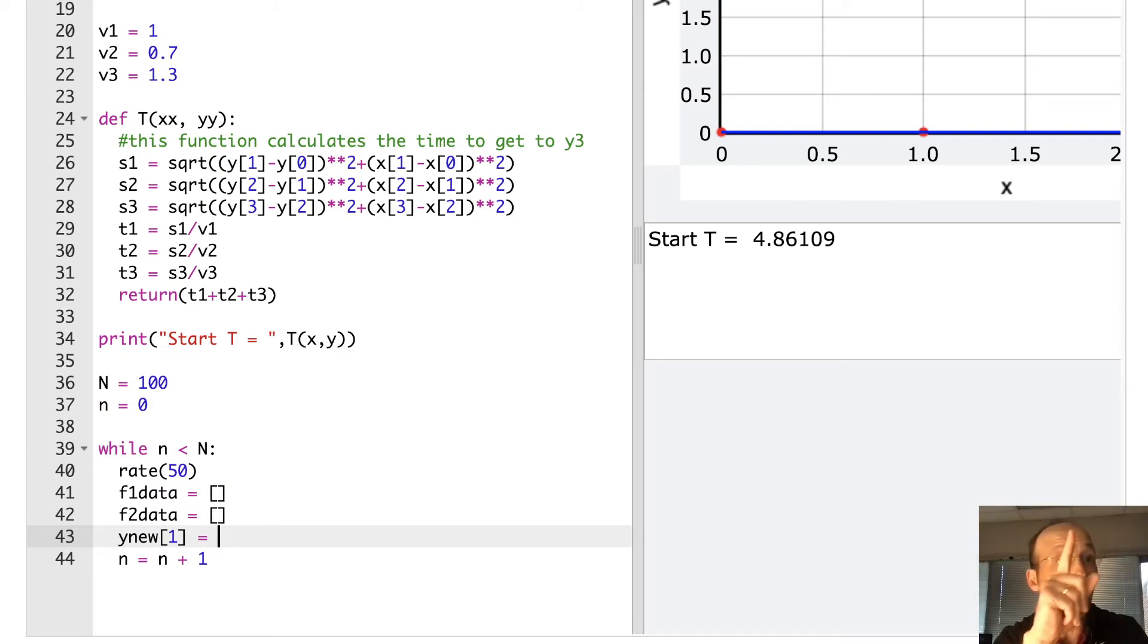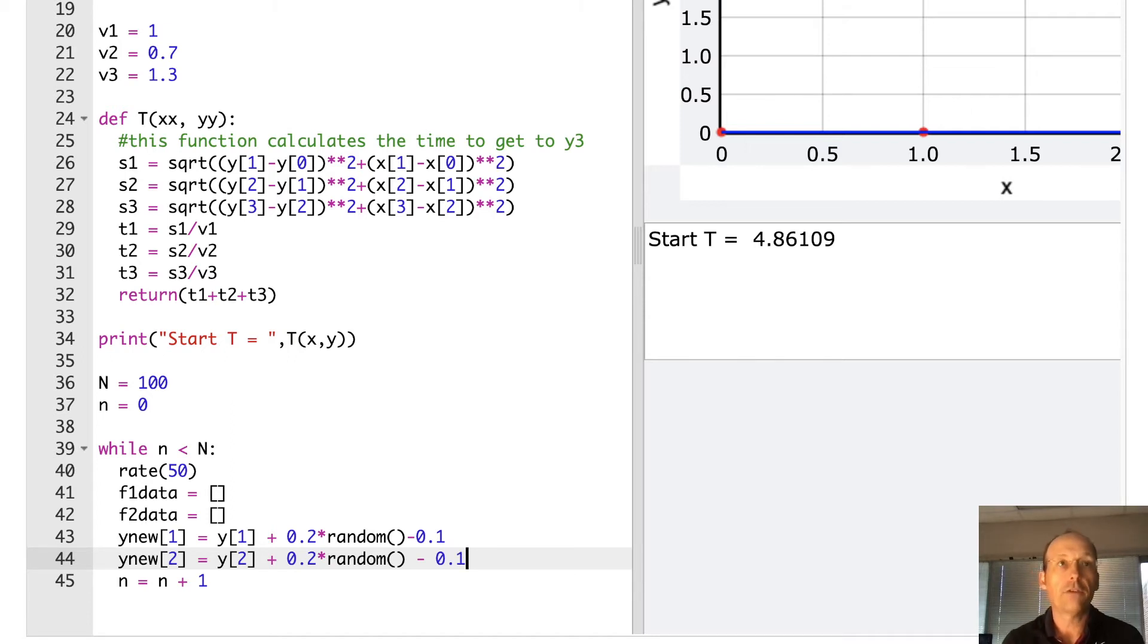So the random number, I want it to go between plus or minus 0.1 in the Y direction. We could change that. So to do that, in GlowScript Python, we have the random function that returns a number between zero and one. So if I say plus 0.2 times random, that'll be between zero and 0.2. And then if I say minus 0.1, now it'll be from the max would be 0.1, the minimum be negative 0.1. So either go up or down 0.1. And now I'm going to do the same thing for Y new two. Y new two, the second data point is Y two plus 0.2 times random, not random zero, random minus 0.1. Okay. So that's going to make new values.